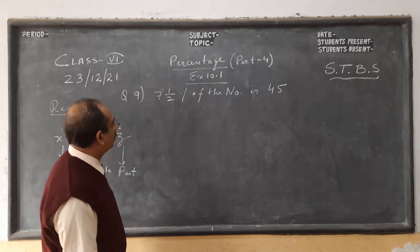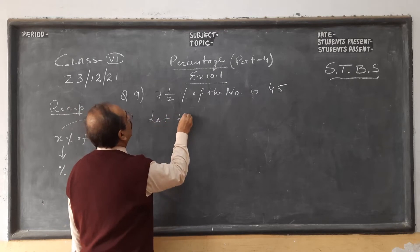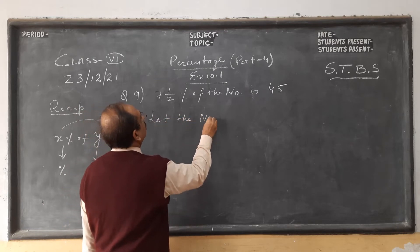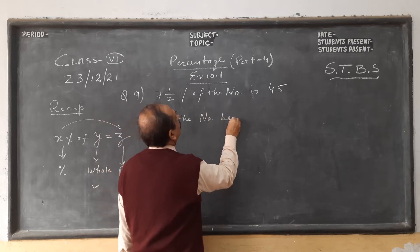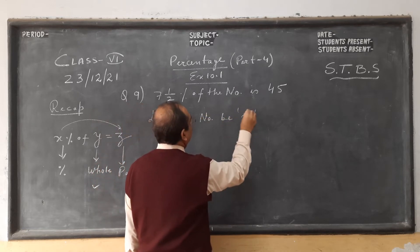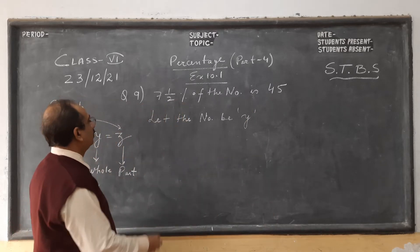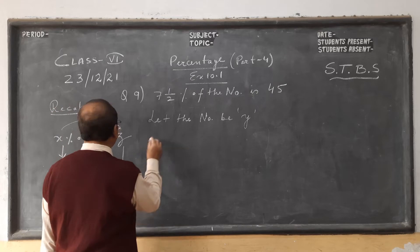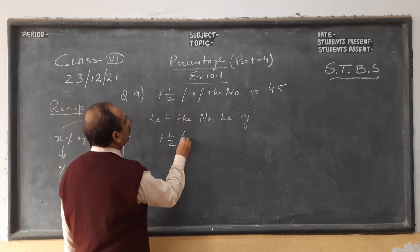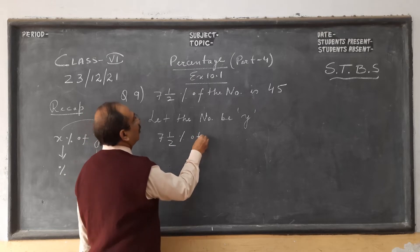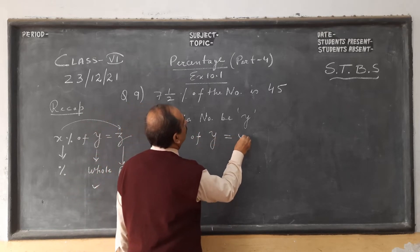Such questions generally — we take the whole. Let the number (N-O stands for number, shortcut) be Y. Generally we take X. So let the number be Y. As per the question, 7 and a half percent of Y is 45.